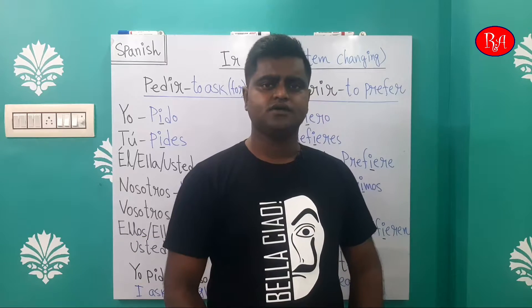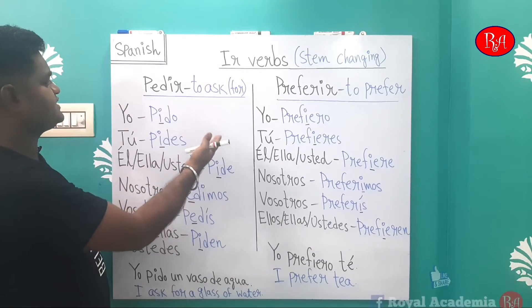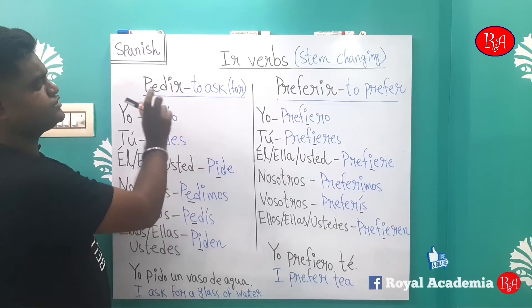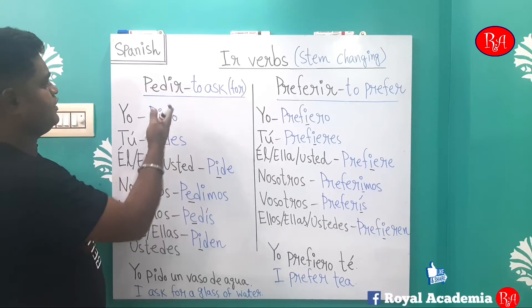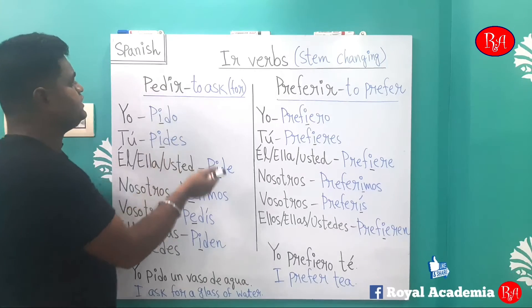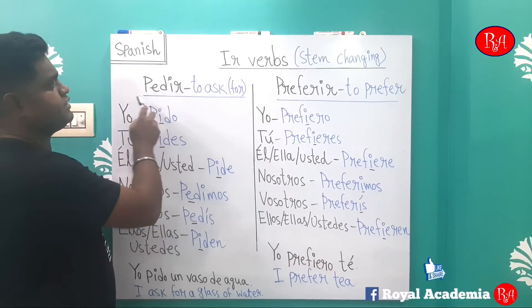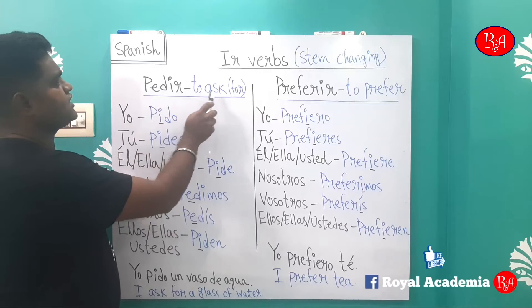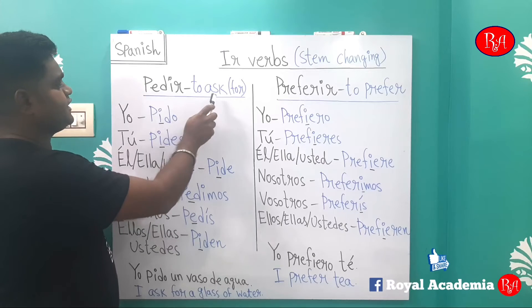So, stem-changing verbs basically change the stem. For example, the verb 'pedir' — 'pedir' means 'to ask for'.